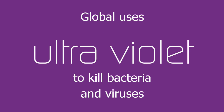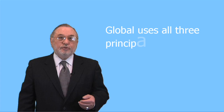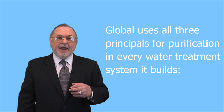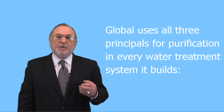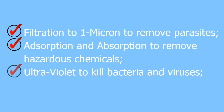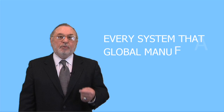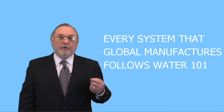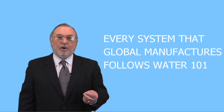Global uses ultraviolet to kill bacteria and viruses. So Global applies all three principles of purification in every water treatment system it builds: filtration to one micron to remove parasites, absorption and adsorption to remove hazardous chemicals, and ultraviolet to kill bacteria and viruses — creating the best quality water in the world. Every system that Global manufactures follows Water 101, whether purifying fresh water, brackish water, sea water, or waste water.